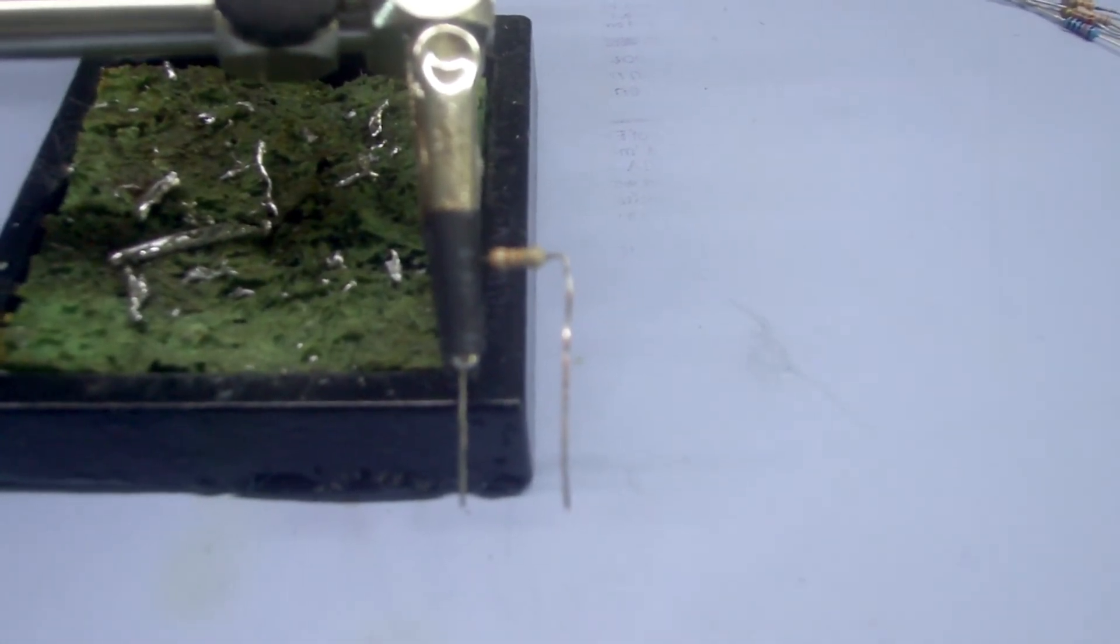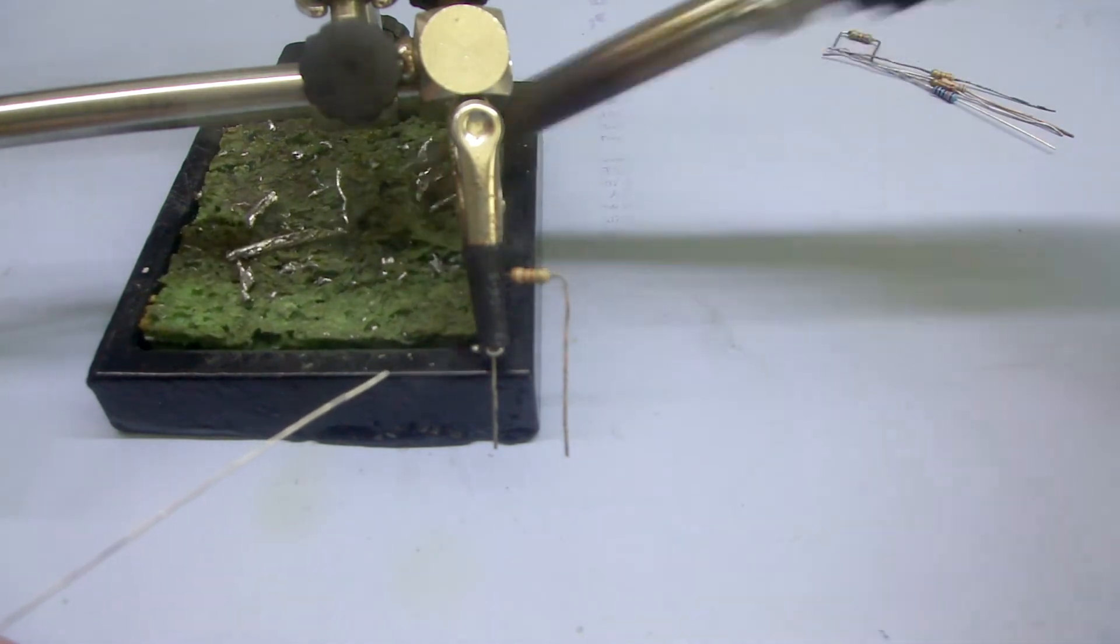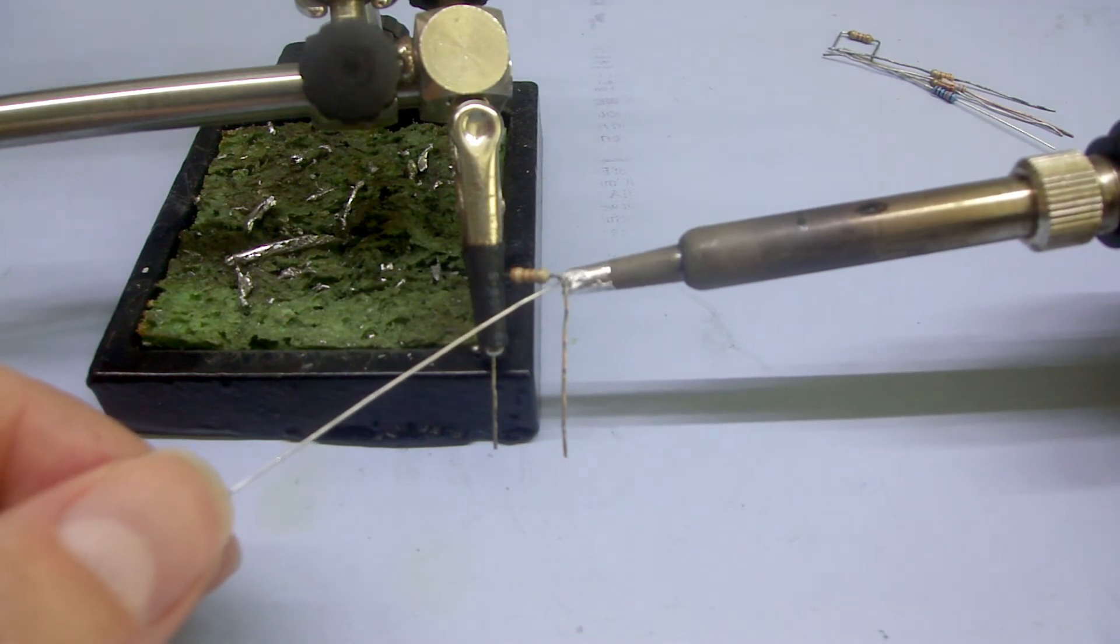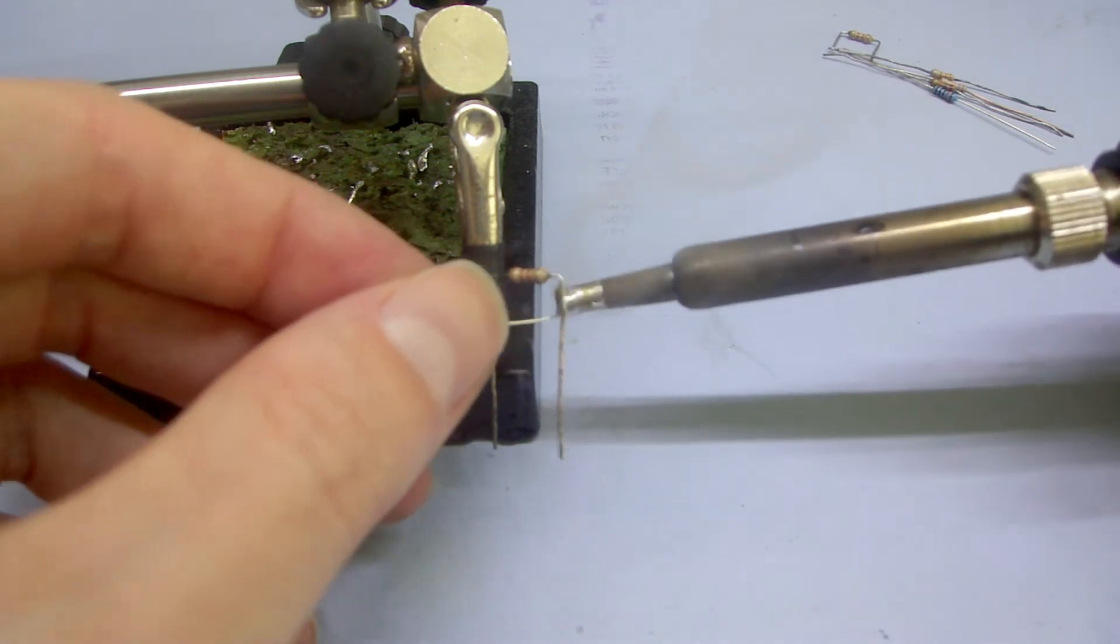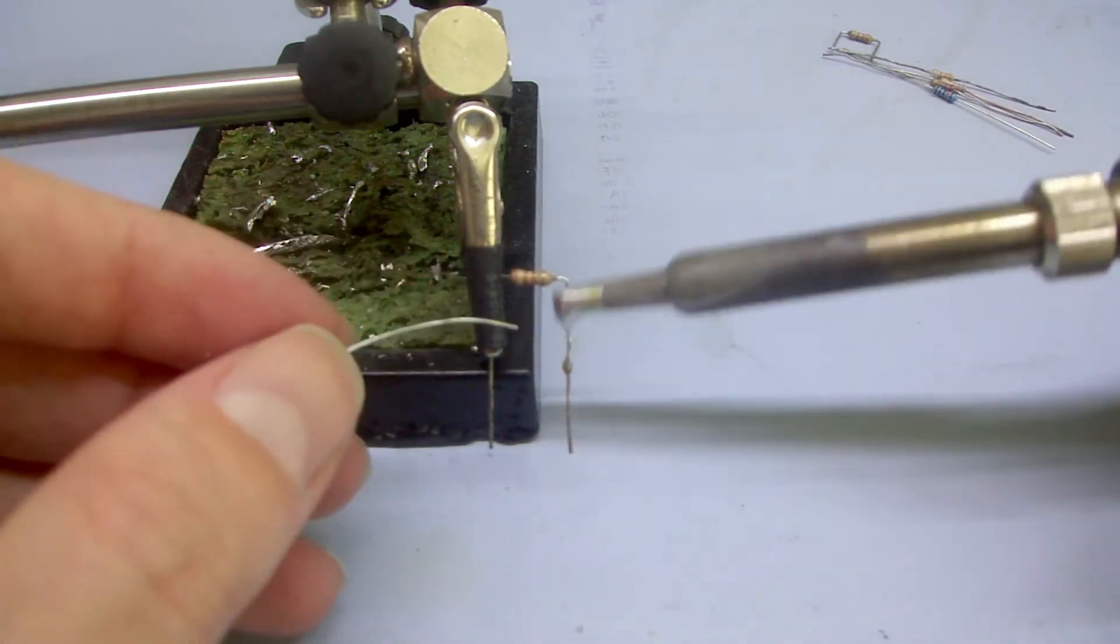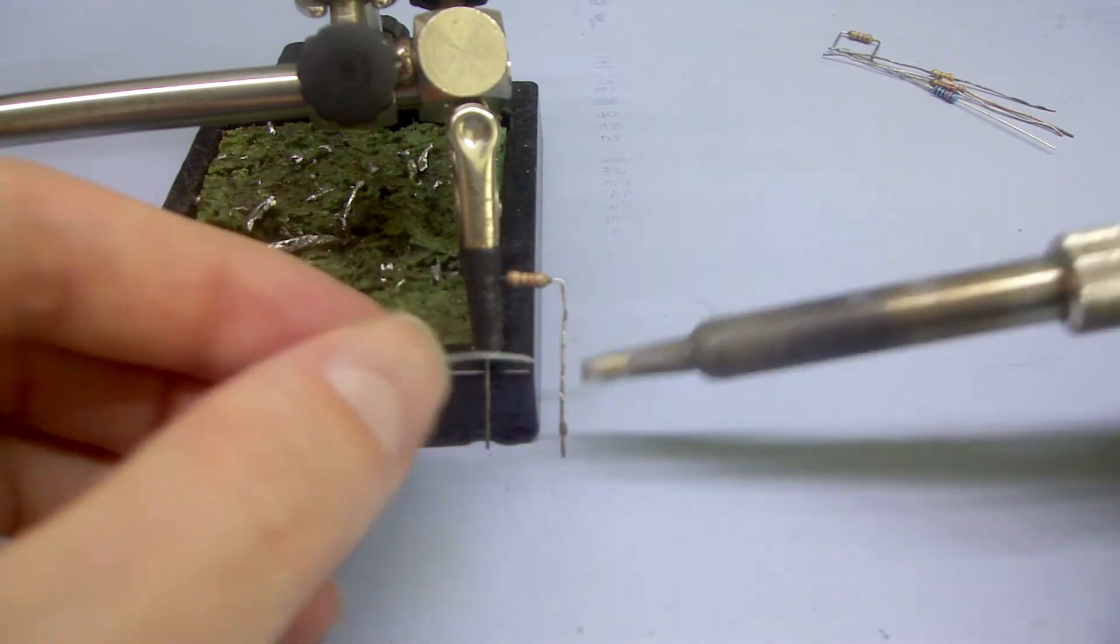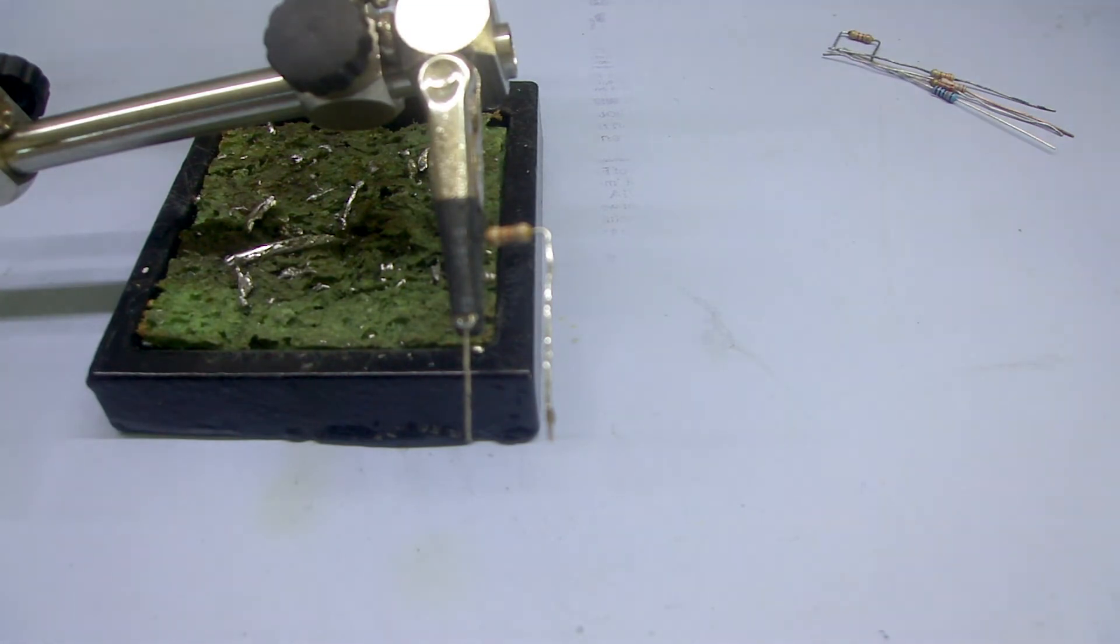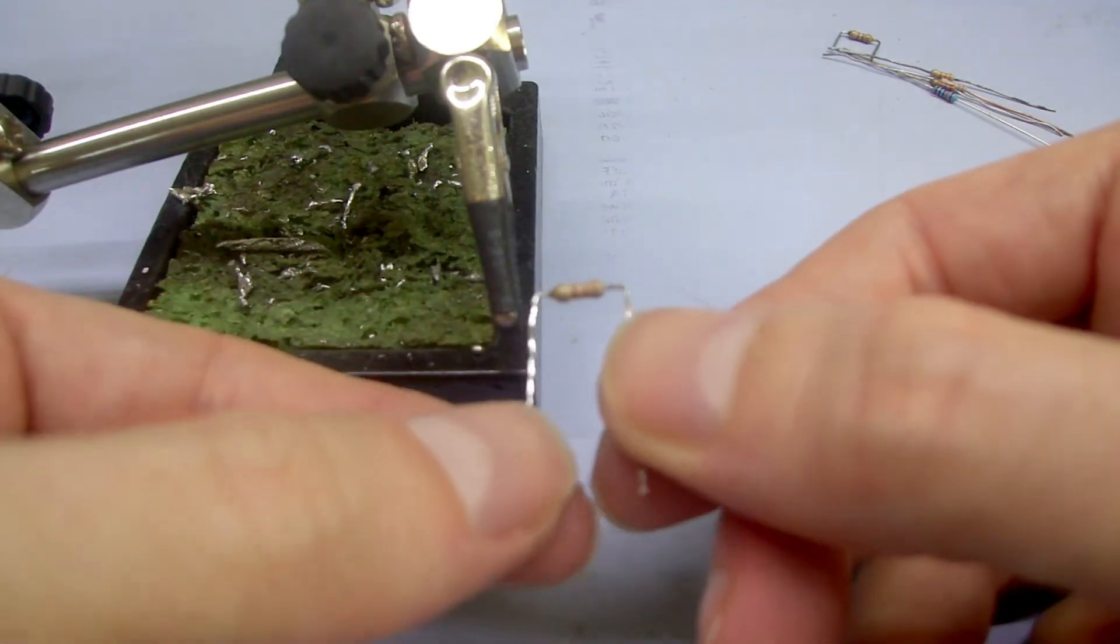Might just have to zoom out a little bit. There we go. If we now just take our solder and our soldering iron, I can just bring that up to the lead. And I can just tin that. And there we go. Much cleaner, much shinier, and much more usable than it previously was.